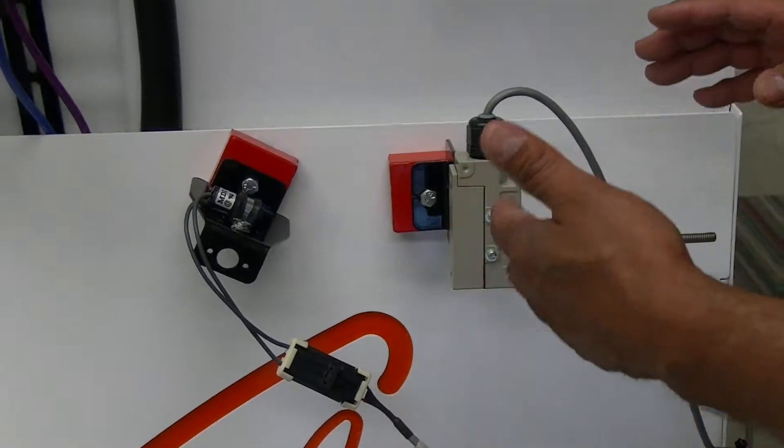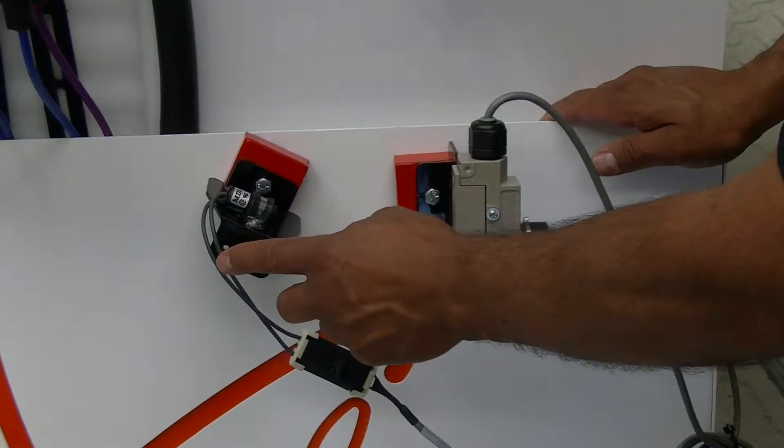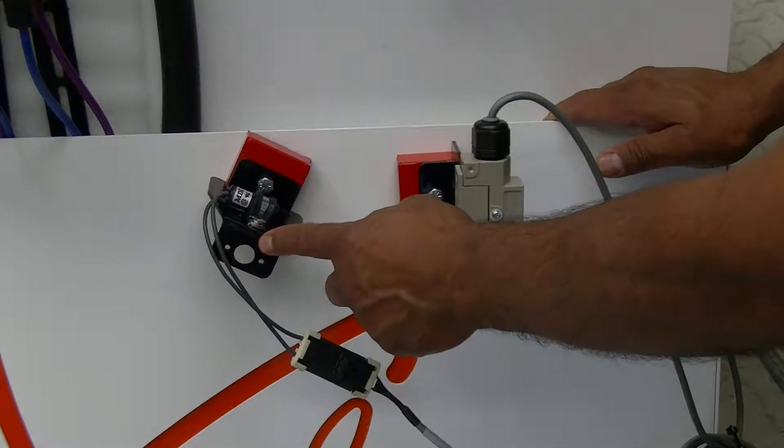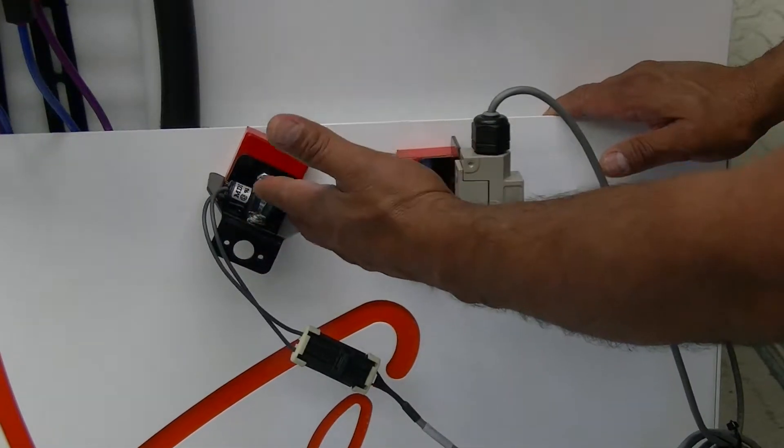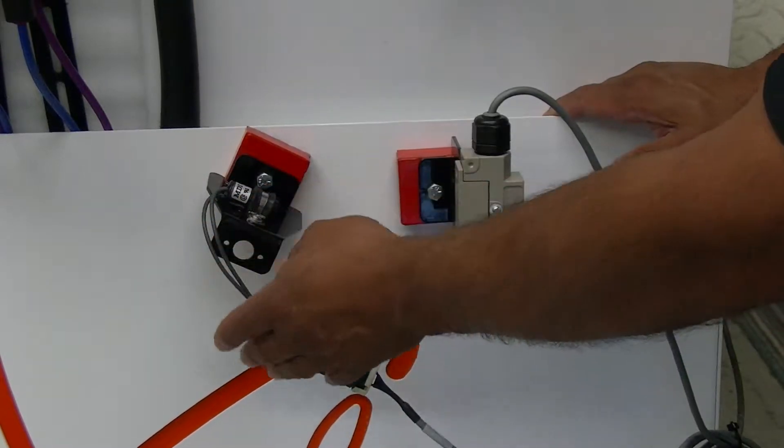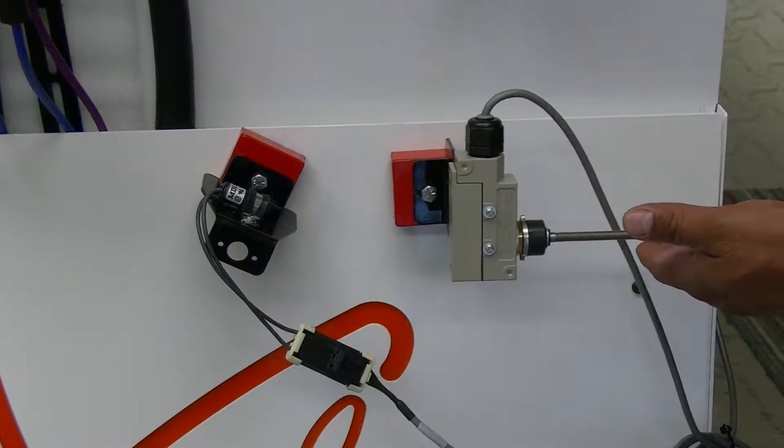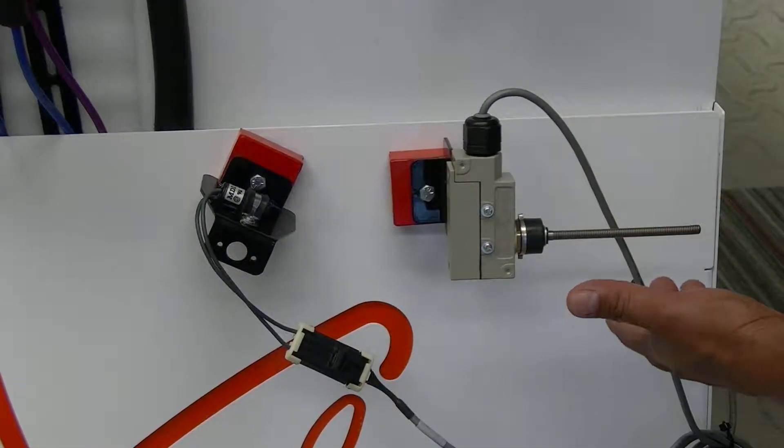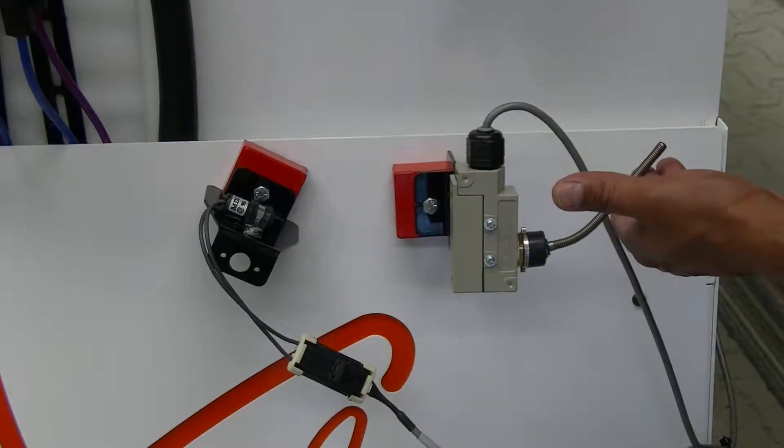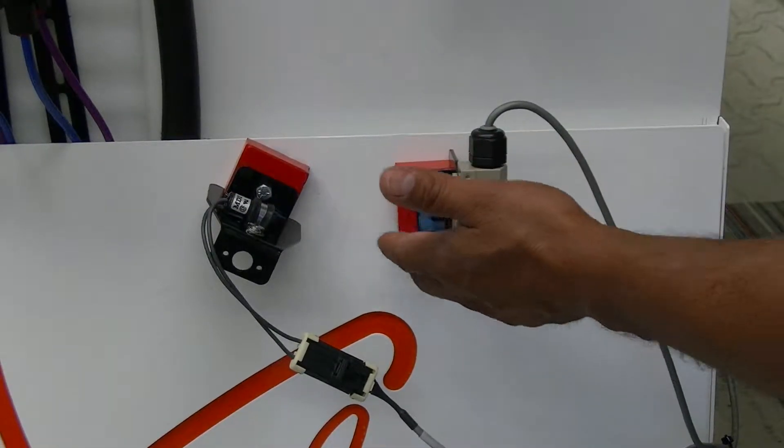They both work identically the same. The only difference is it's a little bit easier to install a mercury switch because you basically find a spot on the implement and raise and lower it and it triggers it. Whereas on the whisker switch, you have to find a location that will basically hit the spring and release it.